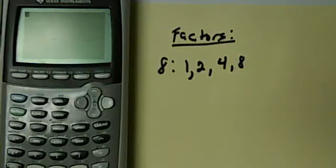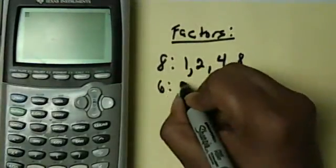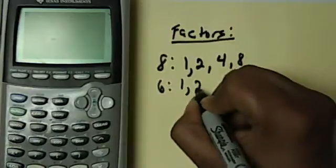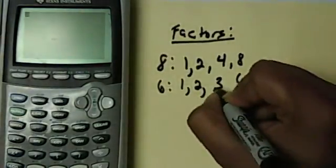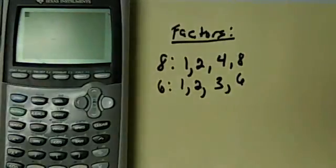So if I wanted to list the factors of 6, I would do the same thing. I would start with 1 and 6, then the next number would be 2 to see if 2 went into it, and it does. It goes into it 3 times, and then I have 3 already.